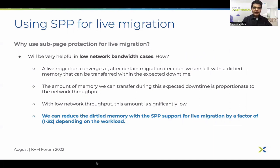How can SPP be useful for live migration? As we can do dirty tracking at sub-page level, if a workload dirties a 4K page only partially, we don't need to transfer the full page to the destination — we should be fine just transferring only the few sub-pages which were dirty. This can significantly reduce the amount of data that needs to be transferred to the destination. SPP can reduce the amount of data to be transferred by a fraction of anywhere between 1 and 32, depending on the access pattern of the workload.